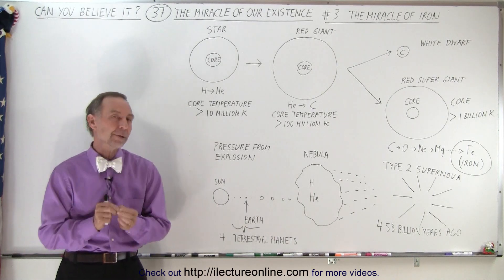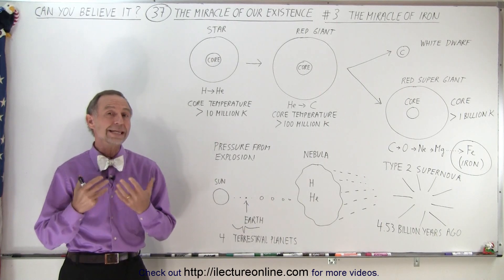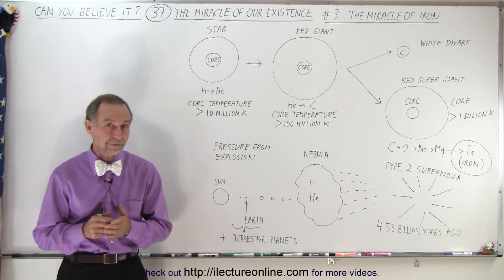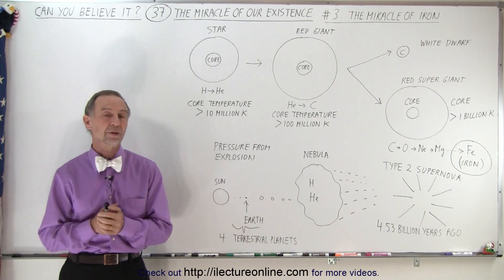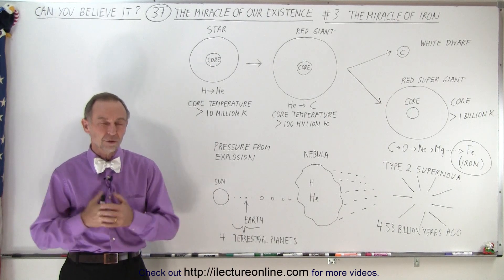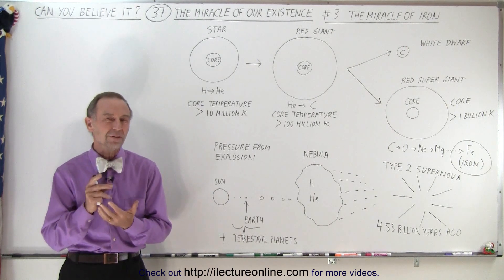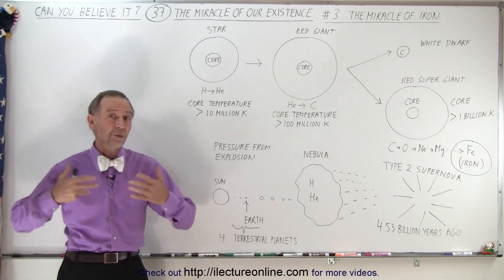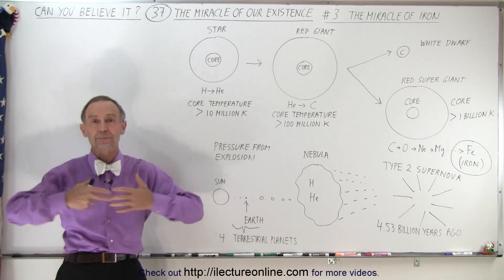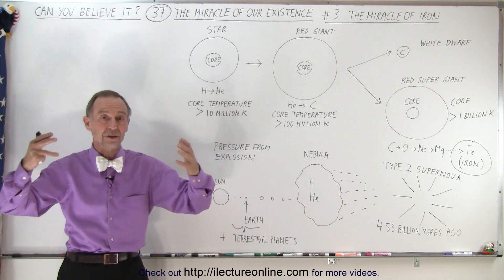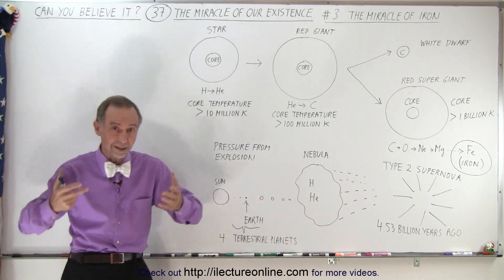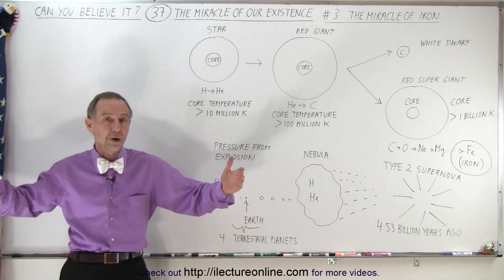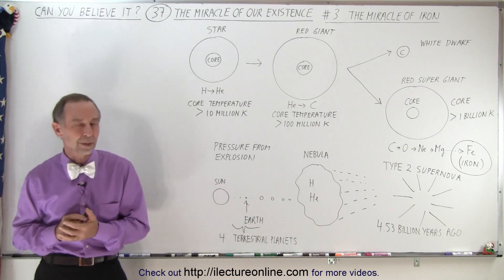There's this element on the periodic table, iron, which is unique compared to all the other elements on the periodic table. And if that uniqueness wasn't there, we probably wouldn't exist. There's a reason why, and the reason is that that was the only way that the elements on the periodic table could have been created and spread into the universe so that the Sun and the solar system could utilize that material to make a solar system as unique as ours. So let me explain.